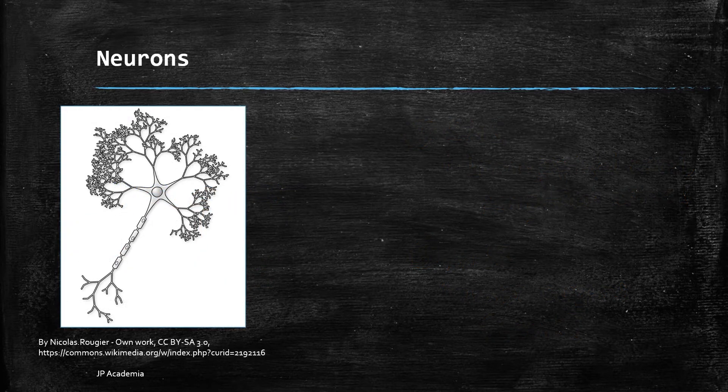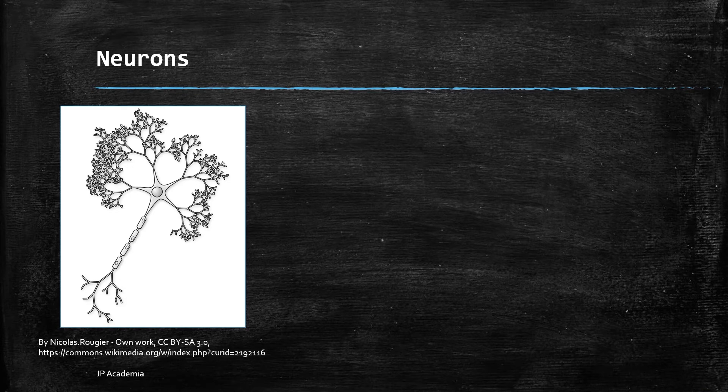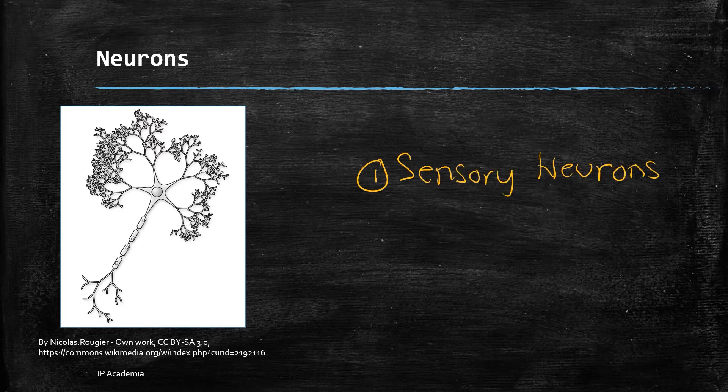Now, let us focus on the neuron. Neurons can be divided into three groups. First, we have the sensory neurons which receive stimuli from sensory organs and monitor the external and internal surrounding of the body.